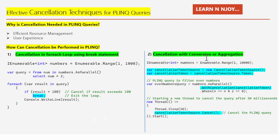Now let's see the second technique: cancellation with conversion or aggregation. In this technique, we utilize cancellation tokens to cancel PLINQ queries that involve conversion or aggregation operations. By using a cancellation token, we can gracefully cancel the query when needed. Here I have written: `IEnumerable<int> numbers = Enumerable.Range(1, 10000)`, creating a sequence of integers from one to ten thousand.